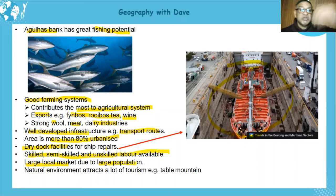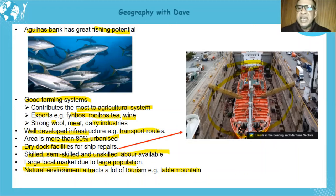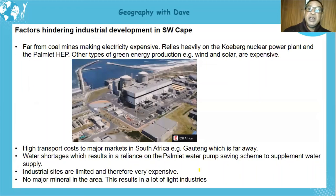The natural environment attracts significant tourism — Table Mountain being a prime example — which creates a larger market and encourages a variety of production in the region. However, there are also factors hindering industrial development in the southwestern cape.